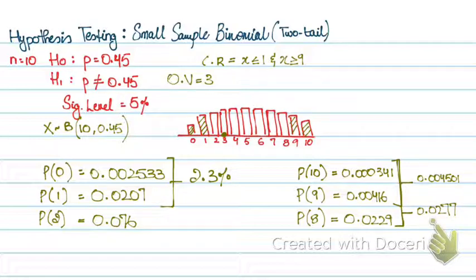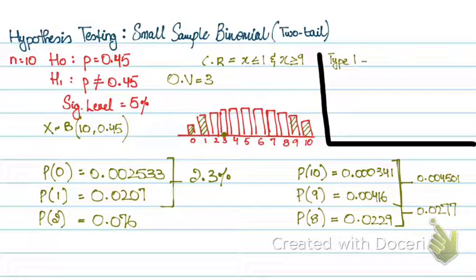So for the probabilities of type 1 and type 2 error, probability of type 1 is basically my total actual significance level - that is the sum of 0.023 and 0.0045. So my type 1 error is basically my total actual significance level.